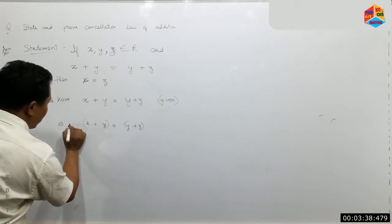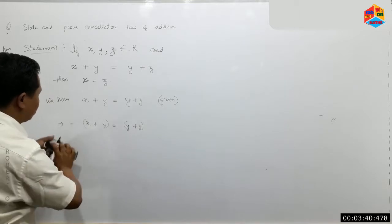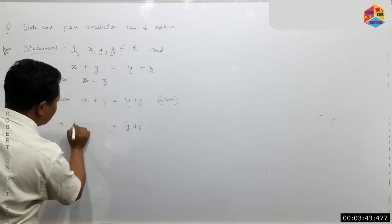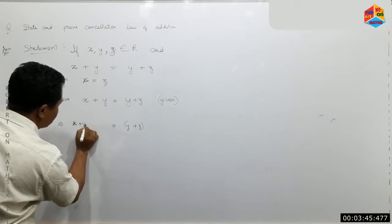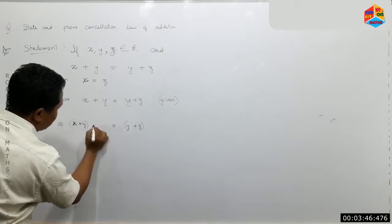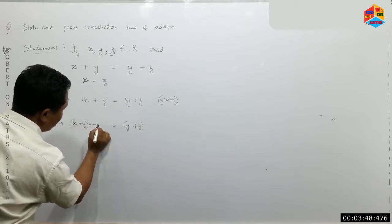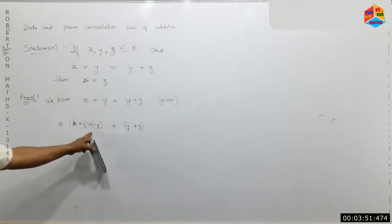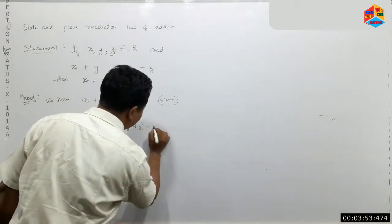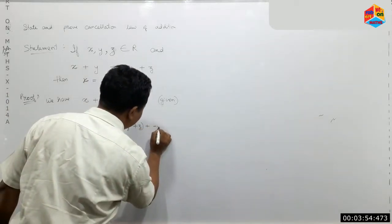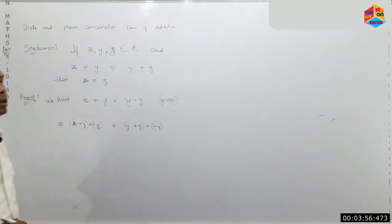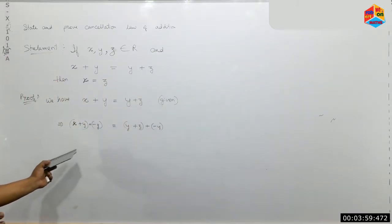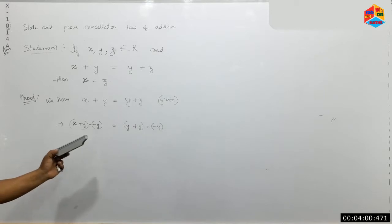We add minus y to both sides. So minus y is added to x plus y on the left, and minus y is added to x plus z on the right. That is why we are adding minus y to both sides.